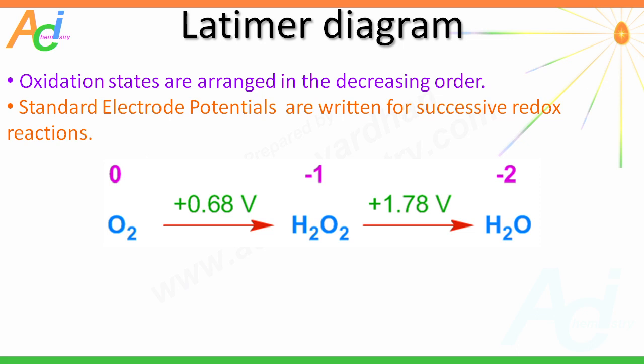One should note that for a less stable oxidation state, the electrode potential of the reaction to its right side is always greater than the electrode potential for the left side reaction. In the case of oxygen, the –1 oxidation state is less stable because the electrode potential written on the right side of hydrogen peroxide is greater than that written on the left side. Hence, the –1 oxidation number is relatively less stable and undergoes disproportionation to the 0 and –2 oxidation numbers.